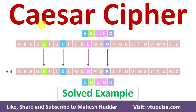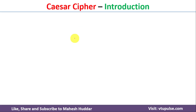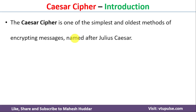Welcome back. In this video, I will explain the concept of Caesar cipher with the help of a simple solid example. First, we will understand what is Caesar cipher. The Caesar cipher is one of the simplest and oldest methods of encrypting messages, named after Julius Caesar.